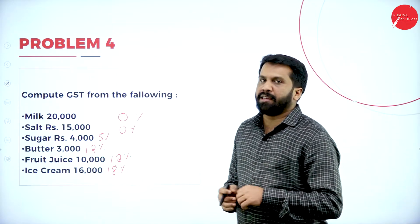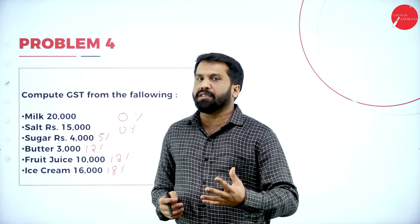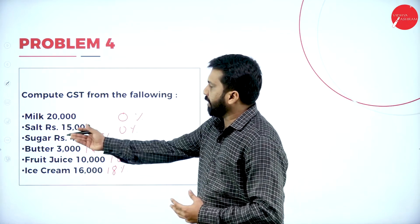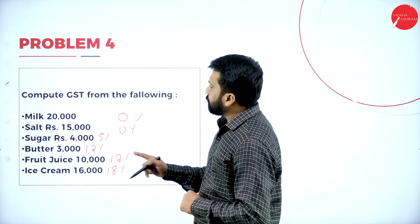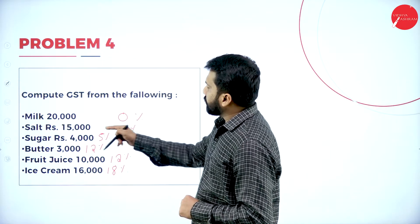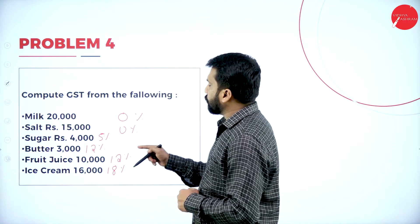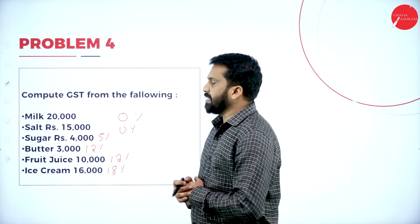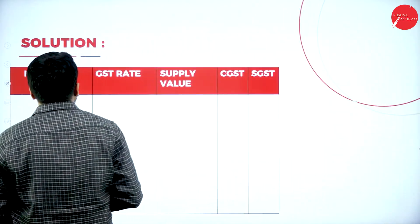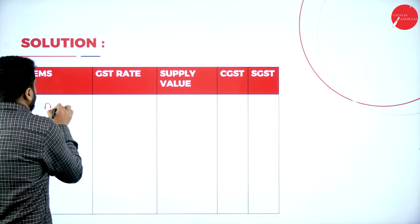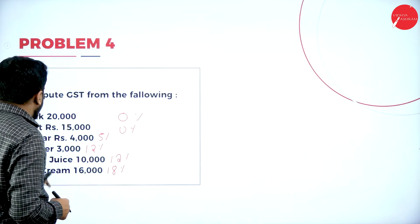There are no shortcuts to remembering all these percentages. If you work out six or seven problems, it will become familiar. Again, you may see butter or sugar — the percentage will not change. Milk zero, salt zero, sugar five percent, butter twelve percent, fruit juice twelve percent, and ice cream eighteen percent.